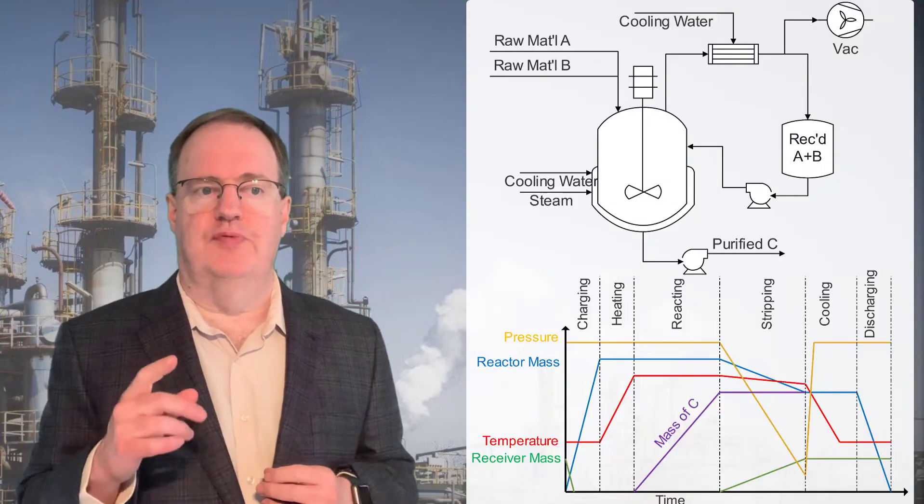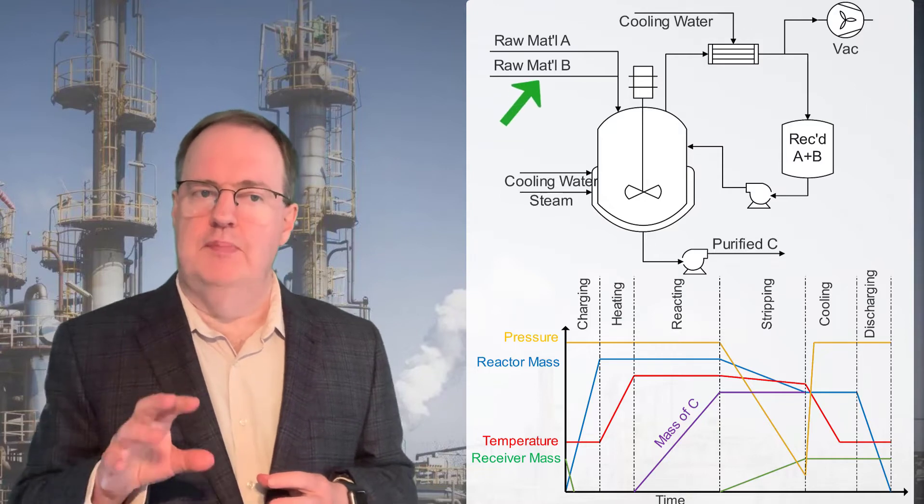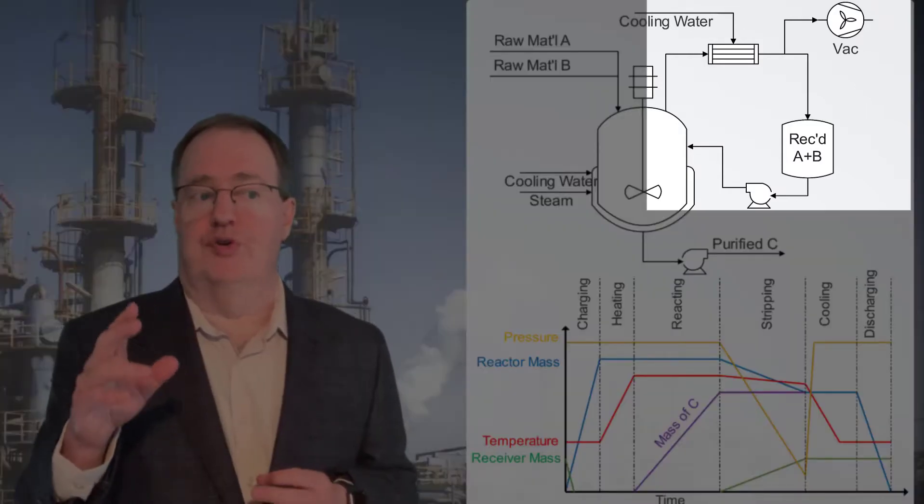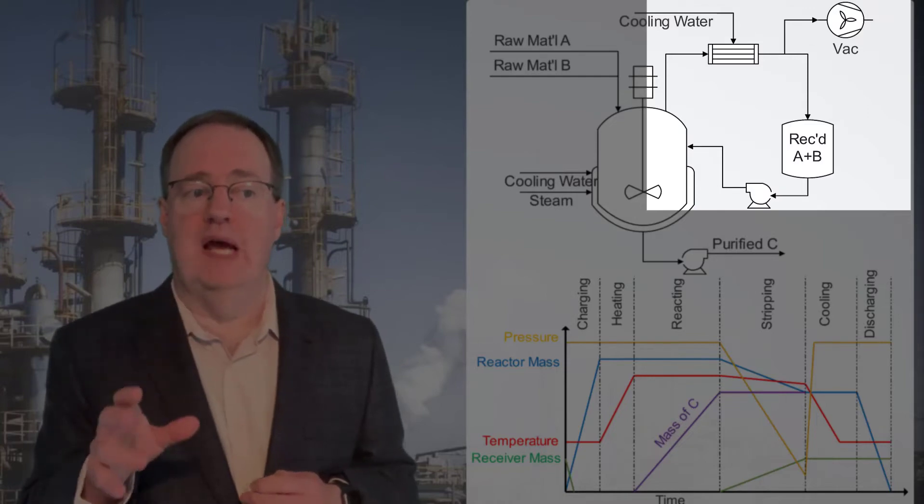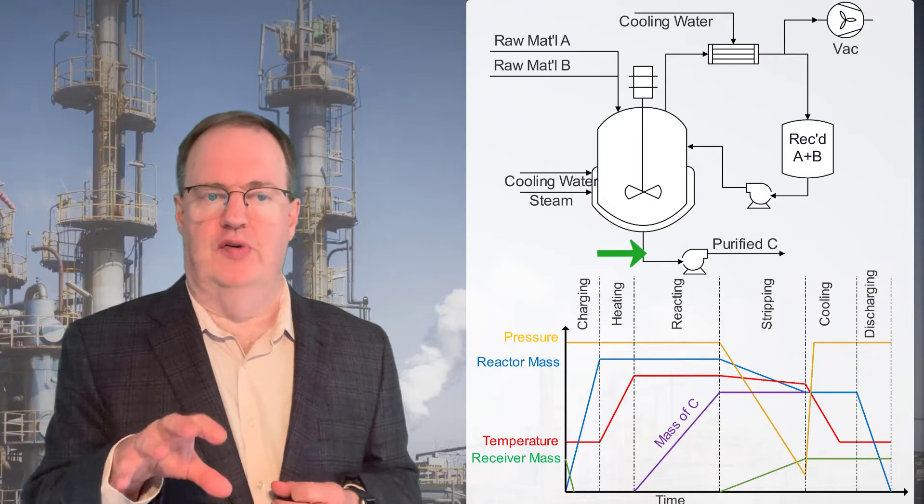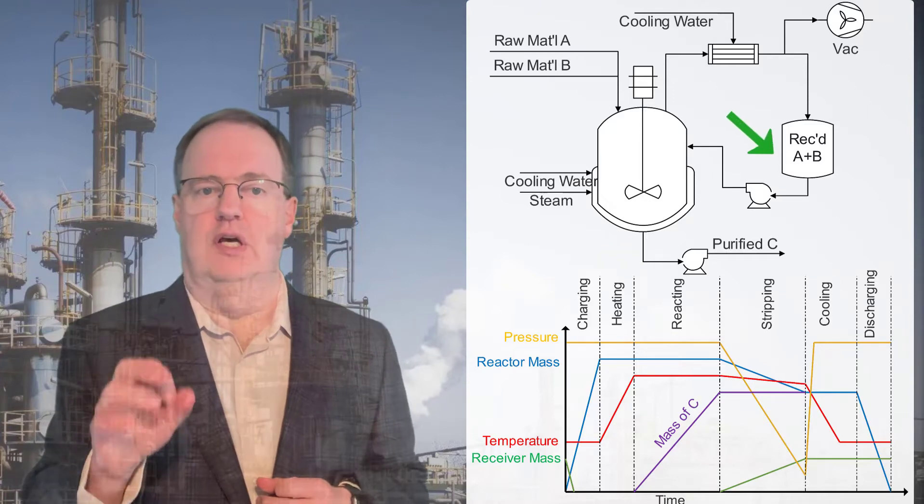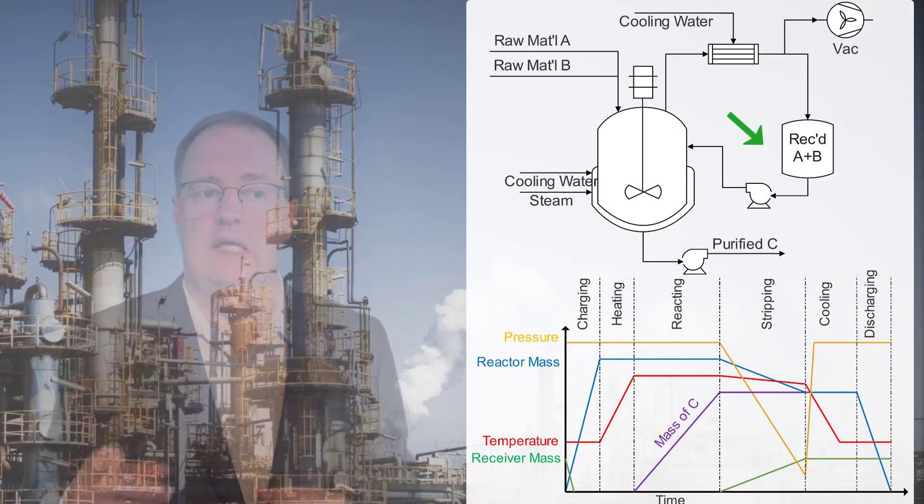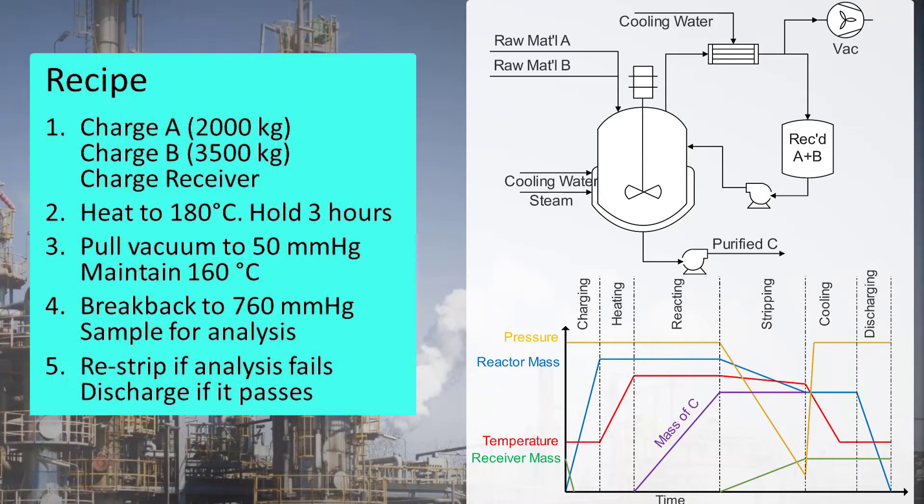Let's return to an example from the States chapter. A plus B reacts to C when heated. We boil or strip off the unreacted A and B under vacuum, then discharge the purified C. The unreacted A and B condensate stripped off into the receiver is added to the next batch. If we write out the recipe, it looks like this.